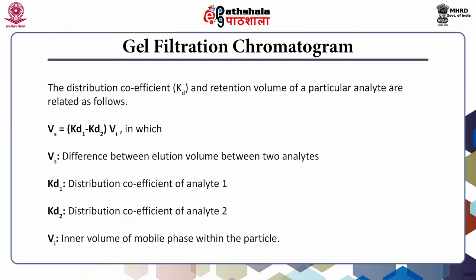There is a relationship between the distribution coefficient and the retention volume, represented by the formula: Vs = (KD1 − KD2) × Vi, where KD1 is the distribution coefficient of analyte 1, KD2 is the distribution coefficient of analyte 2, and Vi is the inner volume of mobile phase within the particle. The difference in KD values multiplied by Vi gives the difference between the elution volumes of two analytes.